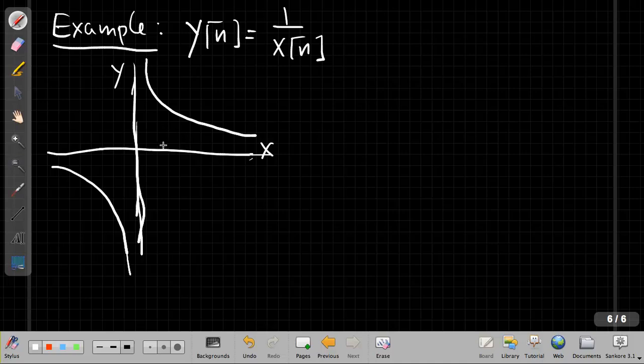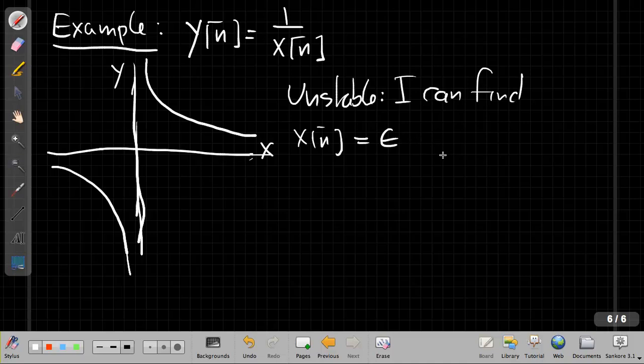So this is a good hint that this system is unstable because it says I can get a very small input and make things get arbitrarily large for y. So this turns out to be unstable. You can say I can find x[n] equal to some epsilon. So just a constant signal x[n] can get arbitrarily small so that the magnitude of y[n] is greater than any C I want to choose. And that's another way to show something is unbounded. It says I can always find some value of the x that will make y get arbitrarily large. So you can't put any bound on y.